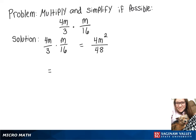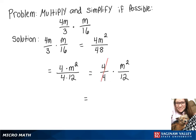If we factor that, we can just separate the top, write 4 times m squared. On the bottom, I can rewrite 48 as 4 times 12. And now if we separate those, we have 4 over 4 times m squared over 12. 4 out of 4 will go away because that's just 1, so our final answer will be m squared over 12.